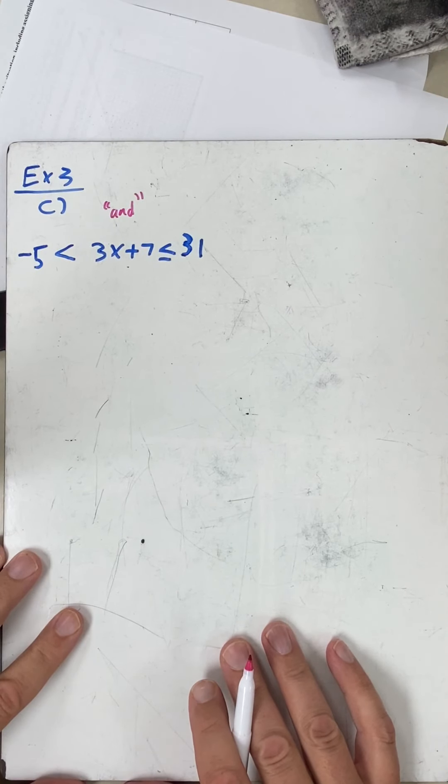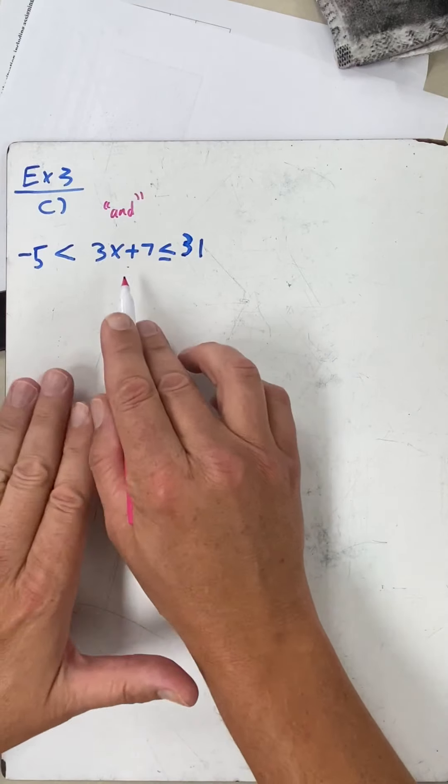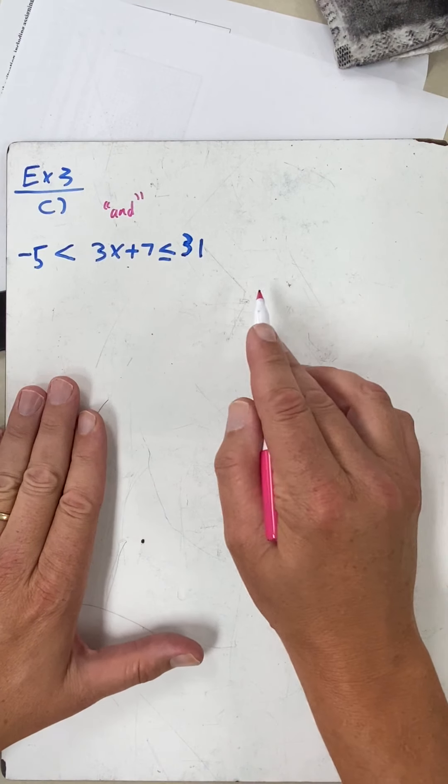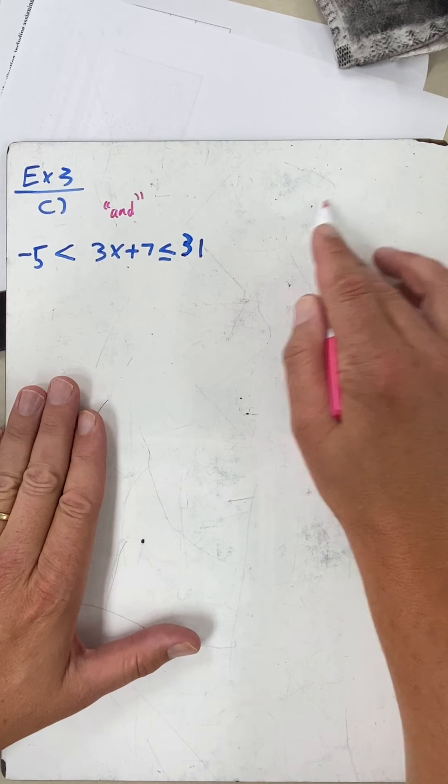Now we go to solve it. The best part about this is whatever I do to one part, I have to do to all three. Normally we just have an equation—whatever we do on the left, we do on the right.